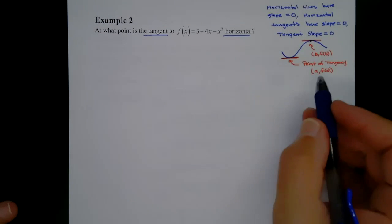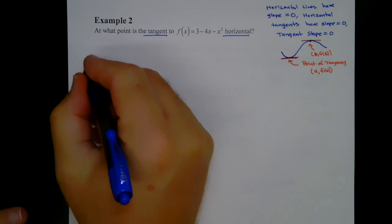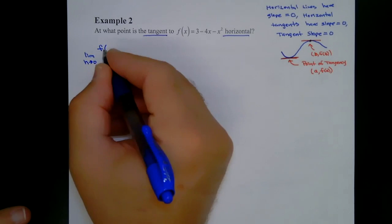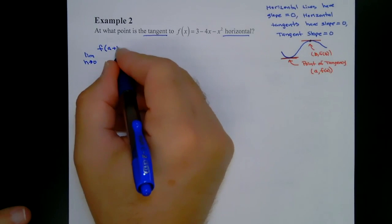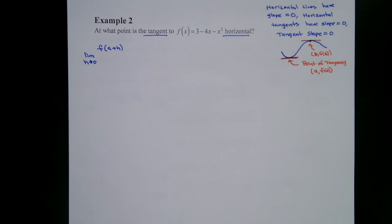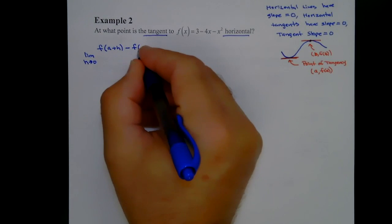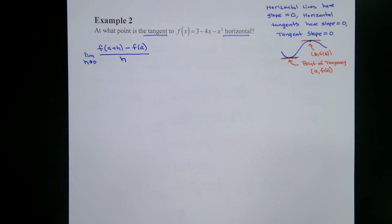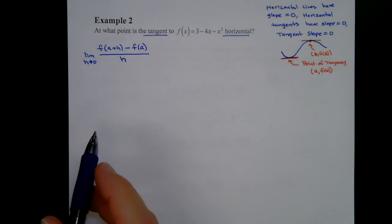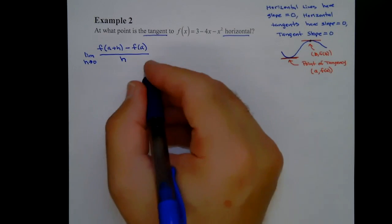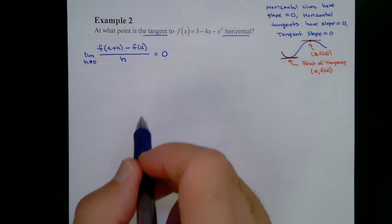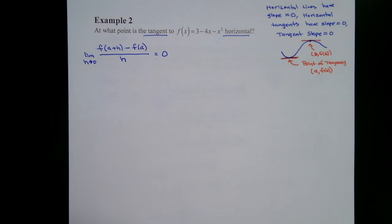To find horizontal tangents, we need a limit. We'll call the unknown x-coordinate 'a', which finds all of them. This is the limit as h approaches zero of [f(a + h) − f(a)] / h. We'll find this limit and set it equal to zero, then solve that equation to find where it's located.